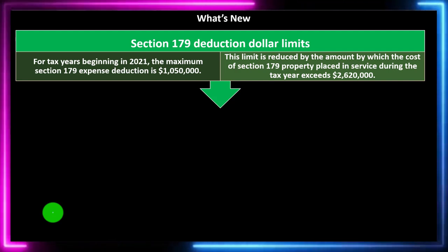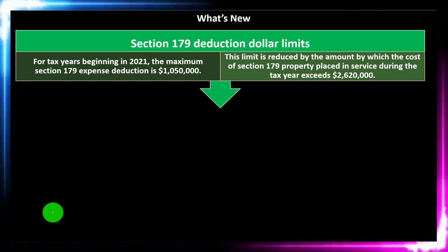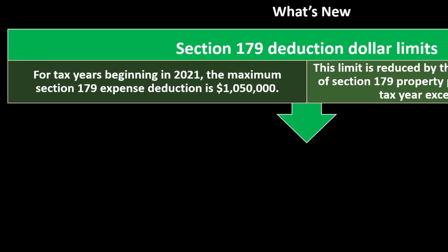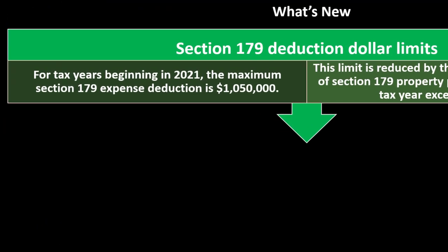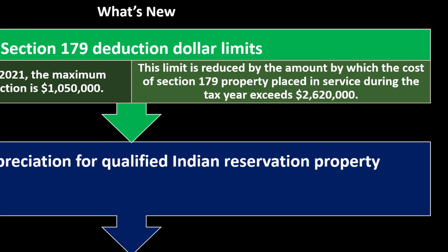What's new: the Section 179 deduction dollar limits. For tax years beginning in 2021, the maximum Section 179 expense deduction is $1,050,000. This limit is reduced by the amount by which the cost of Section 179 property placed in service during the tax year exceeds $2,620,000.